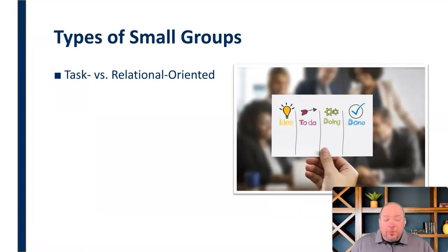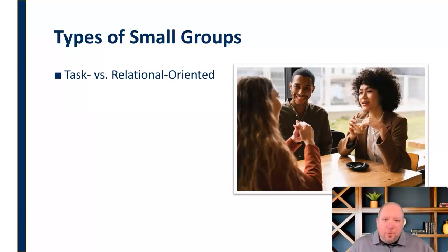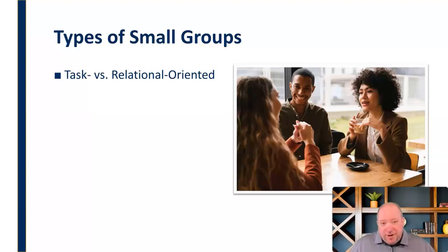Relational-oriented groups, though, are formed more to promote interpersonal connections and are more focused on the quality of interactions that contribute to the well-being of the group members. Think here about support groups, groups of friends — things like that — that are more focused on building those individual relationships and building up the individual people involved, as opposed to having a specific to-do list.